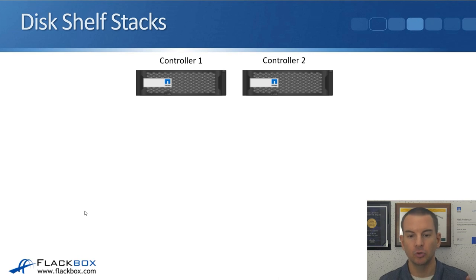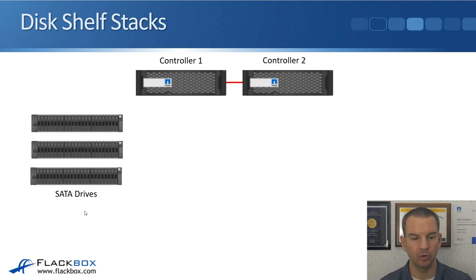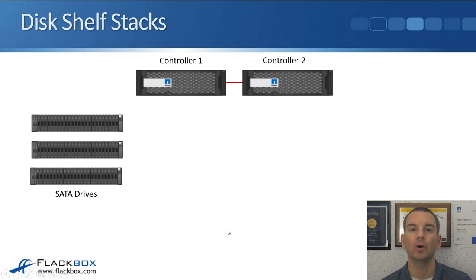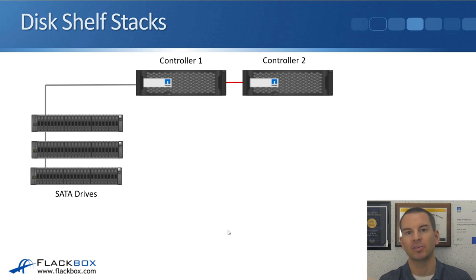I've got an example here with two controllers at the top — these are actually two different nodes or controllers in the same chassis, so they're an HA pair with a high availability connection between them. For our example, let's say we've got a stack of SATA drives — three individual shelves configured in a stack. Controller one connects to the top shelf using one of its SAS ports, and the SAS cables are daisy chained down from the top shelf to the second shelf, then from the second to the third shelf, and so on.